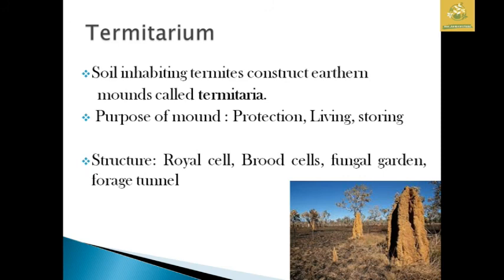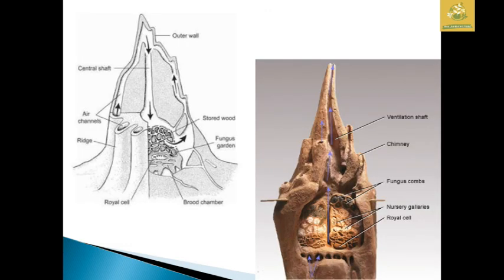The soil-inhabiting termites construct their mound in the field, known as the termitarium. The purpose of the mound is protection, living, and storage of food material. In structure, it can be classified into the royal cell, brood cells, fungal garden, and forage tunnels. The upper surface is made up of an outer wall composed of ventilation shafts and a chimney. Below that are fungus combs where food is processed and stored, then a nursery gallery, and at the bottom are the royal cells and brood chamber.